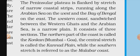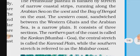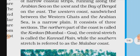The western coast consists of three sections. The northern part of the coast is called the Konkan, covering Mumbai to Goa. The central stretch is called the Karnad Plain, while the southern stretch is referred to as the Malabar Coast.